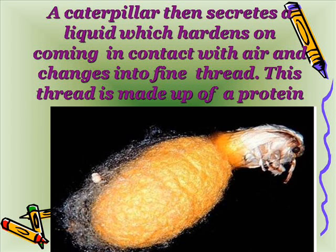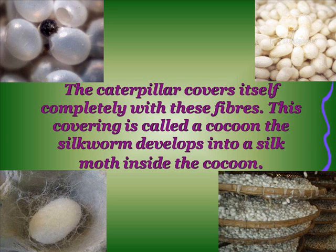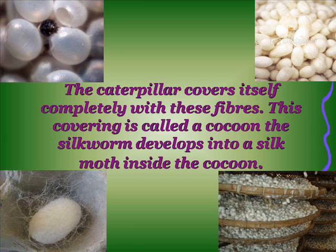This thread is made up of a protein. The caterpillar covers itself completely with this fiber. This covering is called a cocoon. The silkworm develops inside the cocoon. The silk moth eventually comes out of the cocoon.